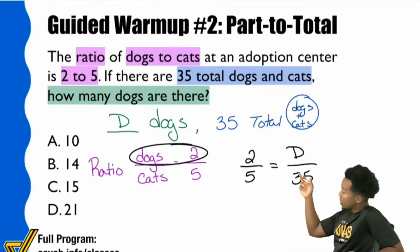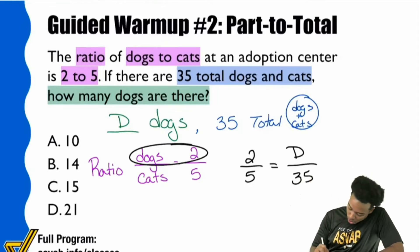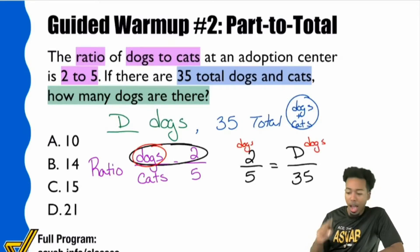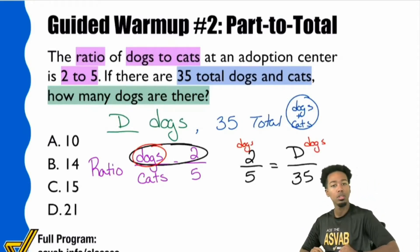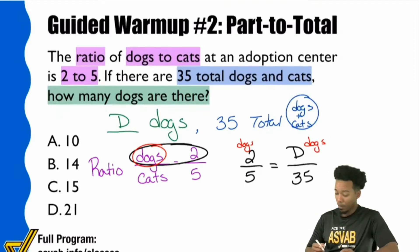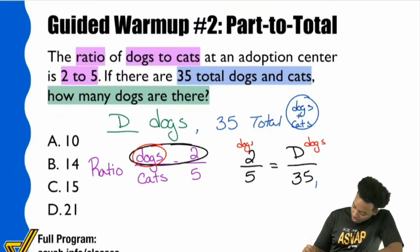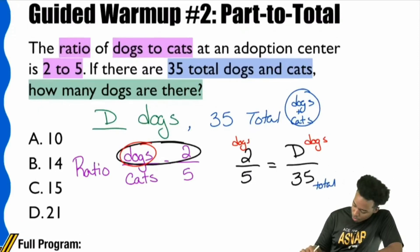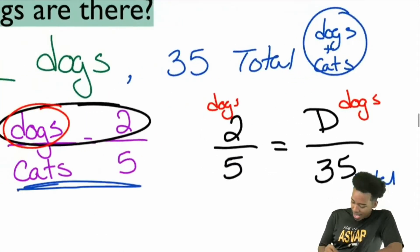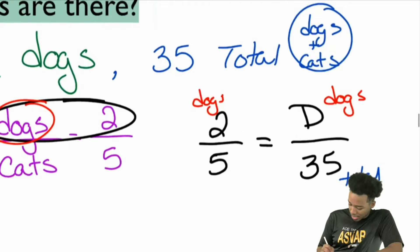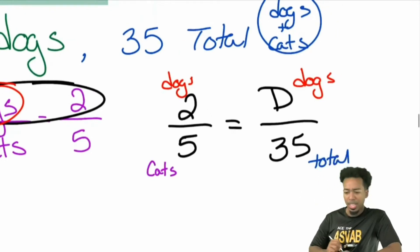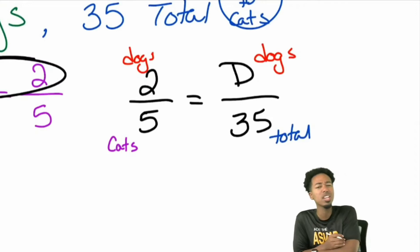So here it says, hey, that two up there, that represents dogs. We saw that. OK, so we're good. That D over here, that represents dogs. I'm good there. I'm cool. But just like Jessica pointed out, yeah, 35 is a total. Notice right here, it says 35. That's a total. Let me zoom in. And then five, that's cats. That's cats. Is that the same? Is this the same things being compared in the same way?